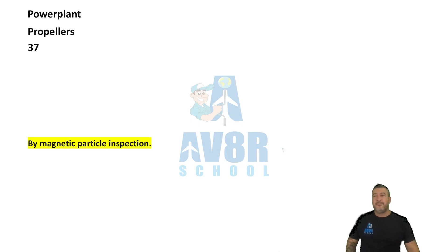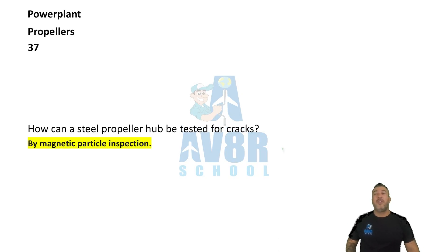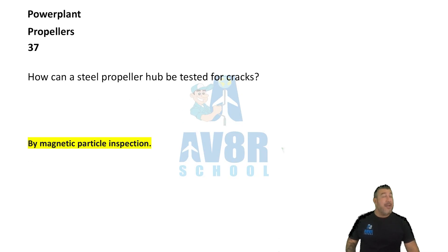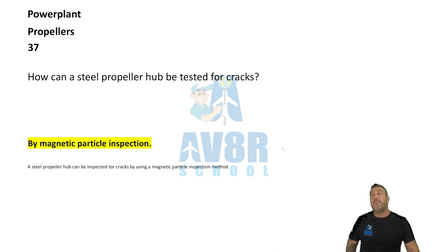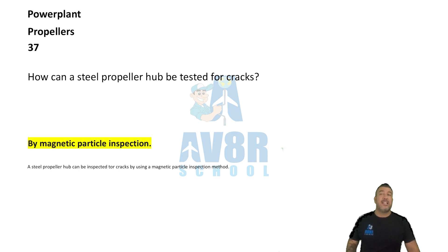Number 37. How can steel propeller hubs be tested for cracks? By magnetic particle inspection. Steel propeller hubs can be tested for cracks by a magnetic particle inspection.